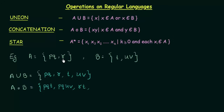We can also join R with UV to get RUV. So the Concatenation of A and B consists of all such pairs where the first element is from A and the second is from B, joined together. That is the Concatenation operation.